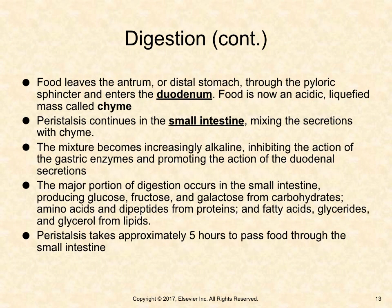Food leaves the antrum, or distal stomach, through the pyloric sphincter and enters the duodenum. Food is now an acidic, liquefied mass called chyme. Peristalsis continues in the small intestine, mixing secretions with chyme. The mixture becomes increasingly alkaline, inhibiting the action of gastric enzymes and promoting the action of the duodenal secretions.